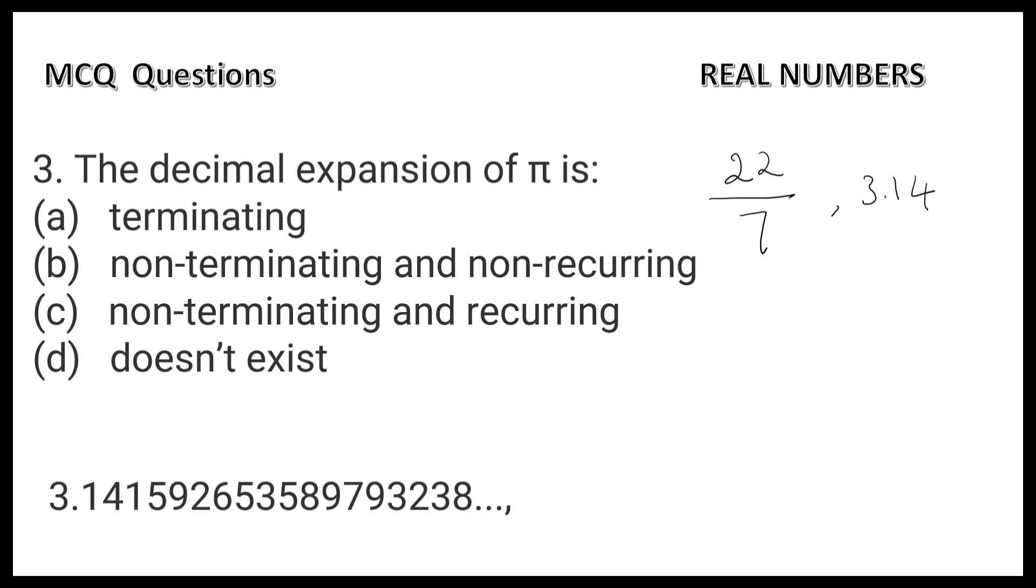but this is not the answer since it is only the approximate value. The exact value of π is 3.141592653589793238... We can observe that the decimal is non-terminating and non-recurring. Option B is correct. π is an irrational number.